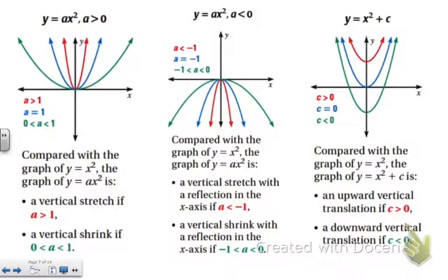So to summarize, if we have y equals ax squared where a is greater than zero, it's going to make our graph skinnier when a is greater than one. So when it's a whole number, that's when it's going to get skinnier. When it's a fraction, or in other words it's greater than zero but less than one, that's where it's going to get wider. When a is less than zero meaning it's negative, that's when it's going to flip over the x axis and be facing downward.